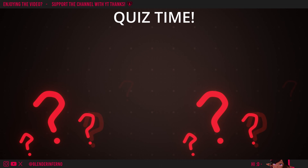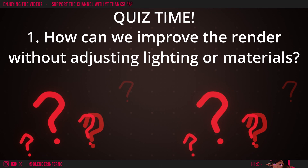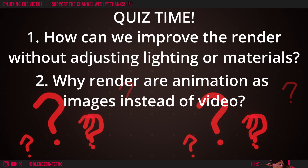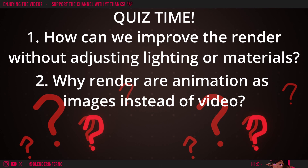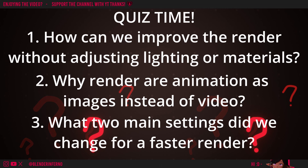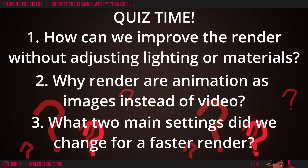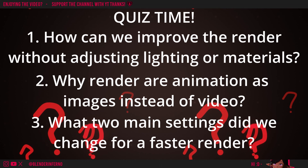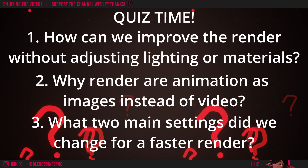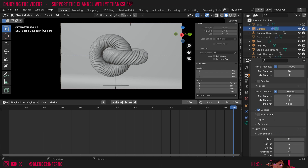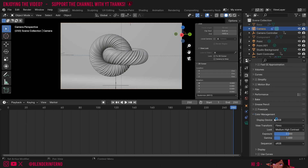Now we're going to have a quick quiz to recap what we learned today. Number 1: How can we make our render pop more without tweaking the lighting or materials? Number 2: Why is it best to render our animations as images or frames rather than video? Number 3: What two settings did we change to improve our render time? Feel free to pause the video and take your time to answer the questions. Number 1 answer: To make our render pop more, we came to our render properties and scrolled down to Color Management. Here we can change the Look of our image to increase the contrast. Contrast helps bring your viewer's attention to the image, so it can be helpful to increase it — just make sure not to go overboard.